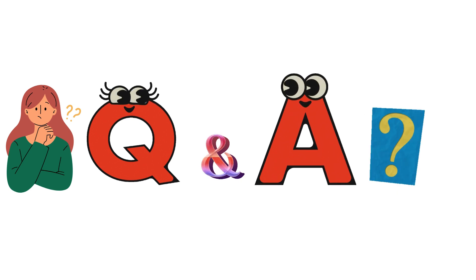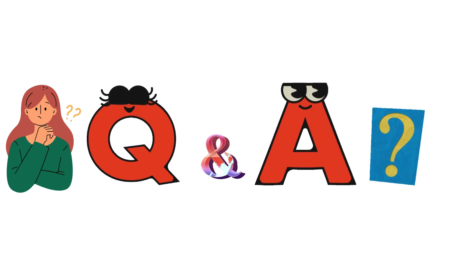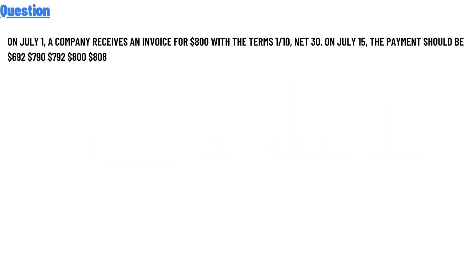Today's question is: on July 1, a company receives an invoice for $800 with the terms of 1/10 net 30. On July 15, the payment should be?